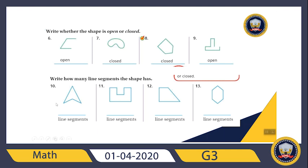Next question: write how many line segments the shape has. Let's count — one, two, three, four. So number 10 has four line segments. How about this one? You tell me first — how many line segments can you see?